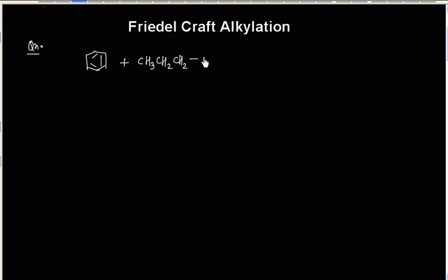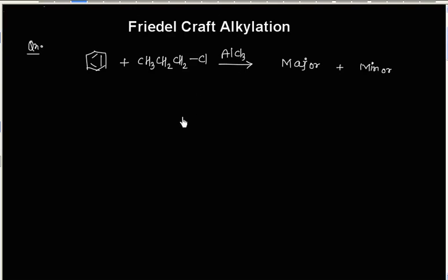When benzene reacts with this alkyl halide, this gives two products. One product is major, another product is minor. This reaction happens in the presence of catalyst AlCl3. You have to write the structure of the major product and the minor product.